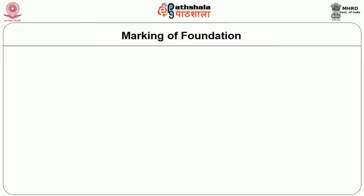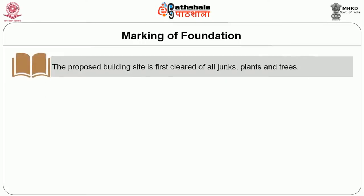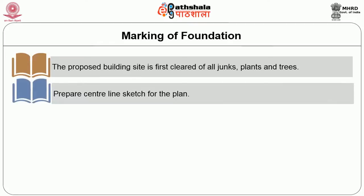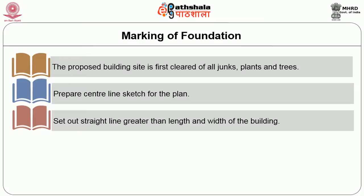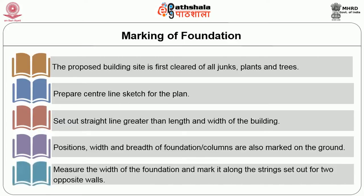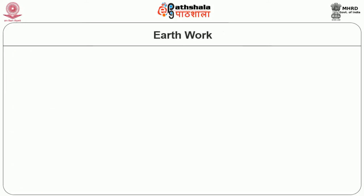Now we go on to how to mark the foundation on the ground, done using the central line method. The proposed building site is first cleared of all the junks, plants and trees. A central line sketch for the plan is prepared and a straight line greater than the length and width of the building is set out. Positions, width and breadth of the foundations or the columns are marked on the ground. The width of the foundation is measured and marked along the strings set out for two opposite walls, and strings are set between these two points fastened with pegs.